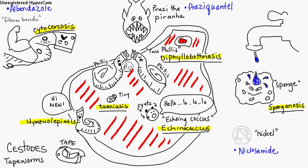Diphyllobothriasis happens from poorly cooked or raw fish — that's what the fish image is for. It's in the small intestine and it competes for B12, so you might see some B12 deficiency type signs and wonder if they have a tapeworm.